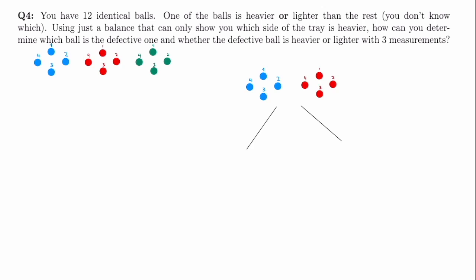In the case that the scale balances, the blue balls and red balls are of equal weight, so the defective ball must be in the green balls. To find it, let's take two green balls and measure them against one green ball and one red ball. Here we have three scenarios. If they're equal, that means the first, second, and third green ball are not defective, which automatically means the fourth green ball is defective.